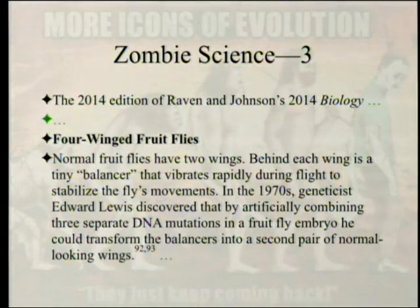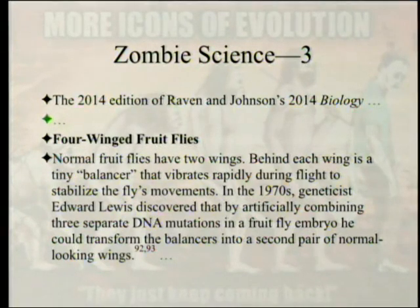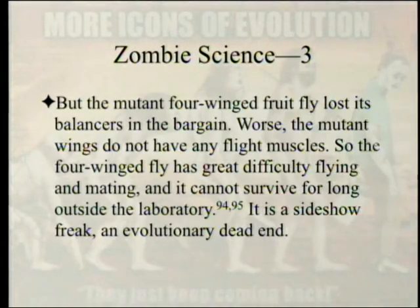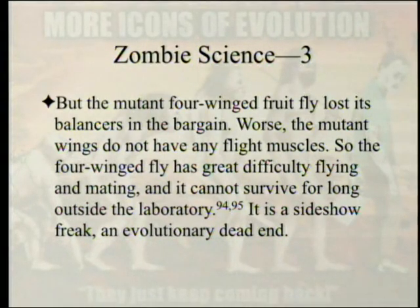Moving to four-winged fruit flies: normal fruit flies have two wings. Behind each wing is a tiny balancer called a haltere that vibrates rapidly during flight to stabilize movement. In the 1970s, geneticist Edward Lewis discovered that by combining three separate DNA mutations in a fruit fly embryo, he could transform the balancers into a second pair of normal-looking wings. But the mutant four-winged fruit fly lost its balancers. Worse, the mutant wings have no flight muscles, so the fly cannot fly or mate and cannot survive outside the laboratory.